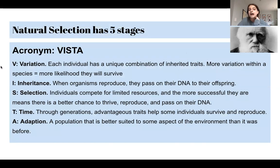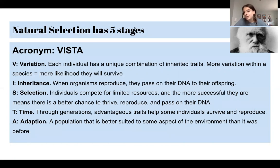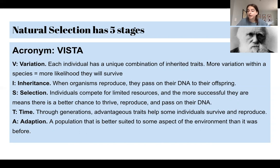Natural selection has five stages and it can be remembered through the acronym VISTA. V is for variation — each individual has a unique combination of inherited traits, and more variation in a species means more likelihood that they will survive. I is for inheritance — when organisms reproduce, they pass on their DNA to their offspring.